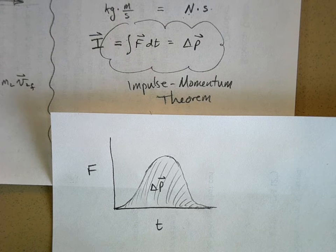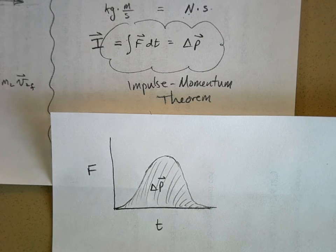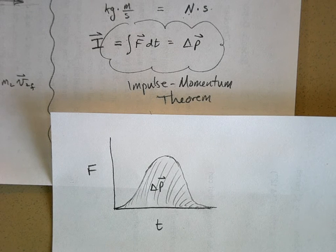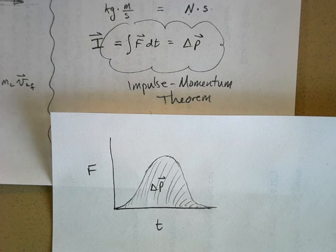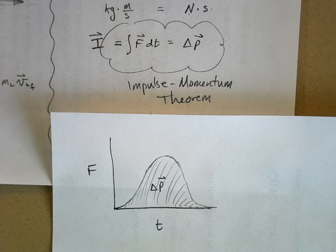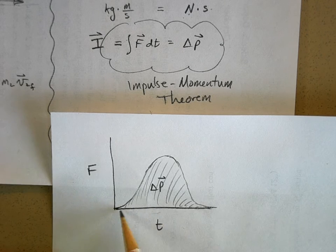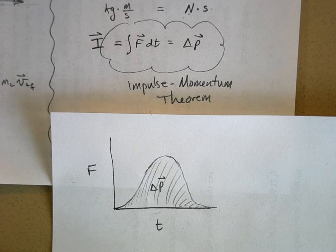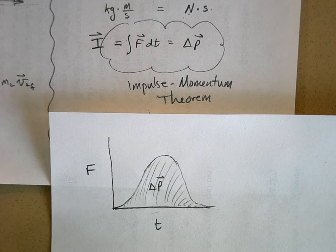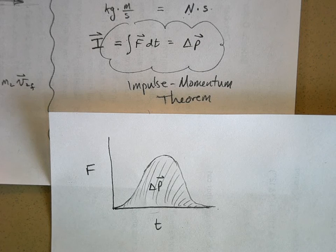So force times time is equal to the change in momentum of the ball. Now if you're talking about a baseball and a bat, this change in momentum is going to be pretty big because the ball might be coming towards the bat at like 95 miles an hour, whatever that is in meters per second, then it hits the bat, it might come off the bat at 120-130 miles an hour. So it's a big change in momentum. That's going to require a force. Now, if this is a very tiny amount of time, this force is going to be huge, whereas if you have a lot of time, if the force is spread out over a lot of time, you won't need as big a force.